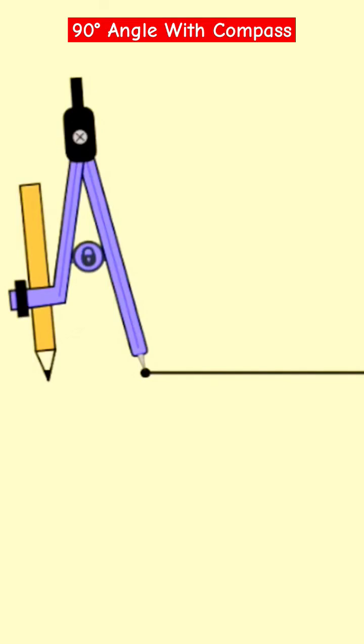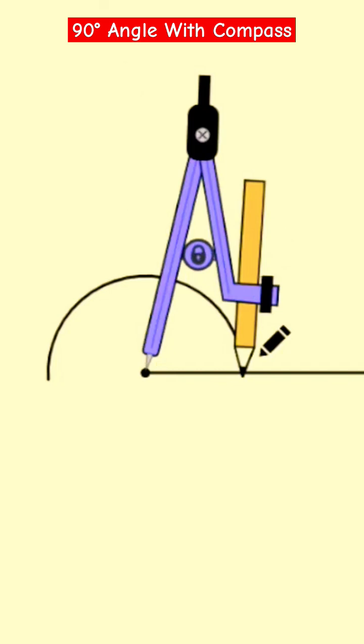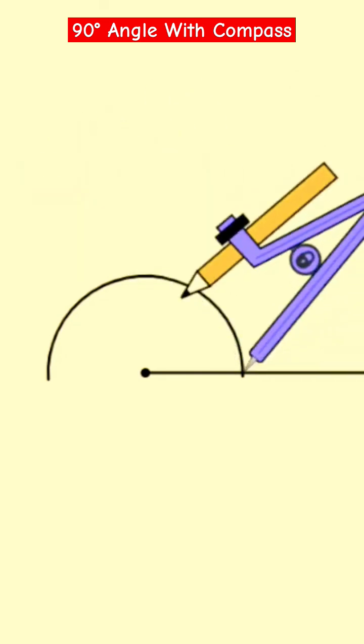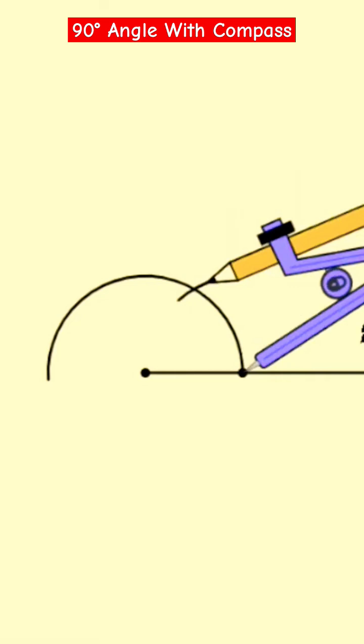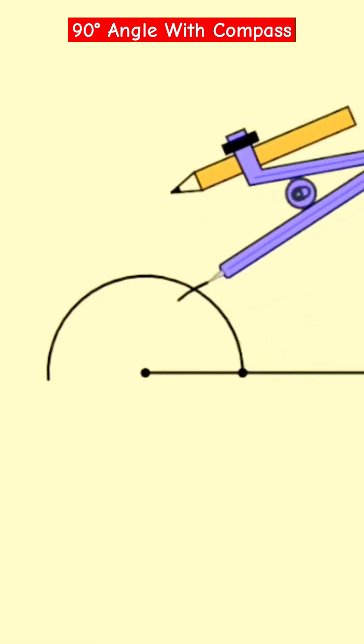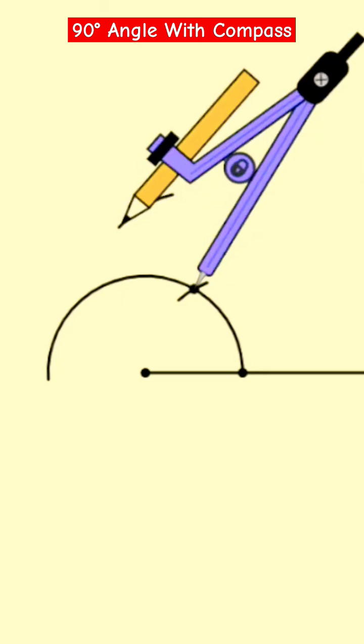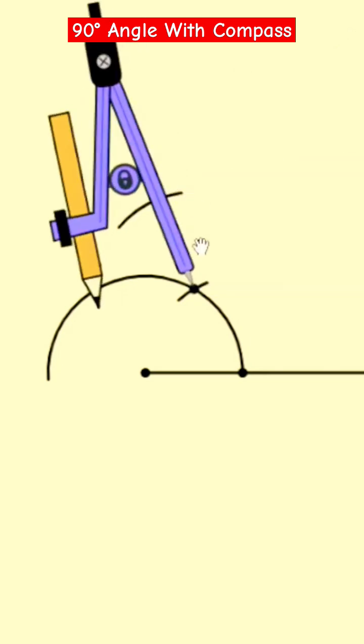Now this measurement you have to keep it as it is because you have to keep this measurement for the rest of the arc. Now you will take this and make an arc here, same measurement. Now you place the point here and make one more arc here and another to the semicircle itself.